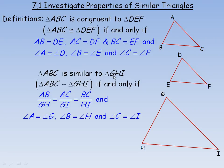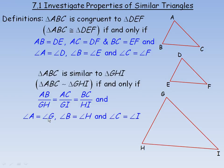Triangle ABC is similar to triangle GHI — this is the symbol for similar — if and only if the ratio of the sides are constant. The ratio of side AB to GH is the same as the ratio of AC to GI, which is in the same ratio as BC to HI. So there is a common ratio between the sides. For example, the sides of the larger triangle might be three times the length of the sides in the smaller triangle. No matter how much the second one is enlarged, the corresponding angles are still equal.